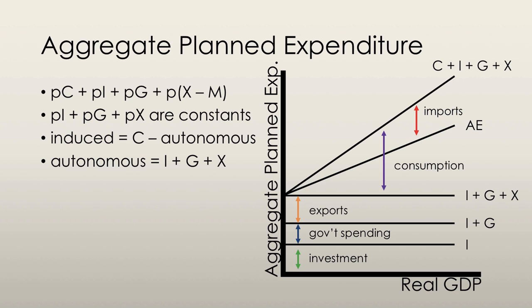Consumption and imports also have an autonomous component, but it does not vary with real GDP. The aggregate expenditure curve summarizes the relationship between aggregate planned expenditure and real GDP. Actual aggregate expenditure always equals real GDP, but planned aggregate expenditure is not always equal to real GDP — this happens because firms end up with inventories that are greater or smaller than planned.